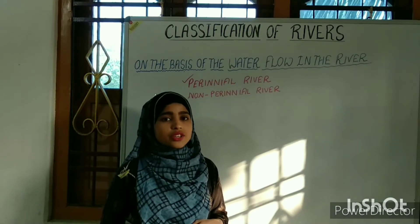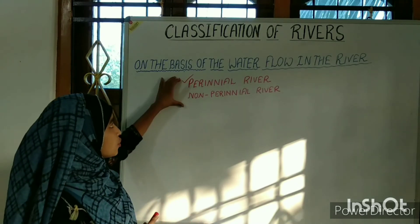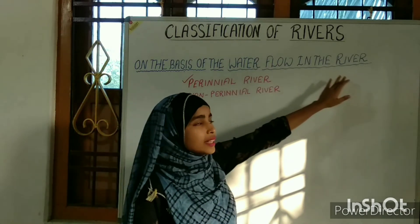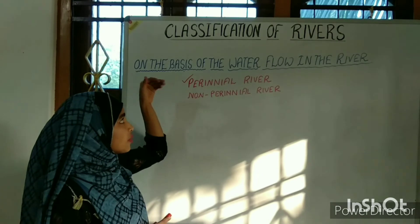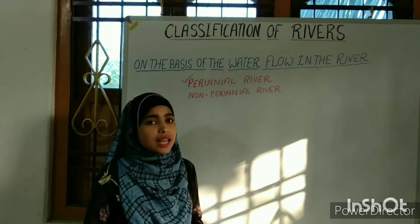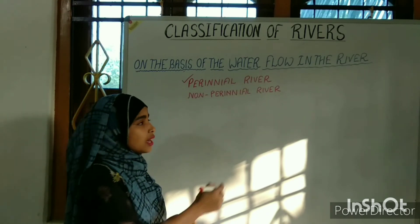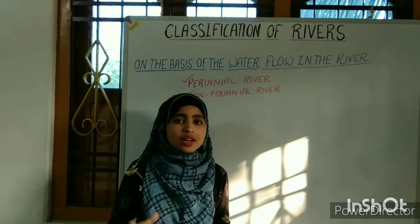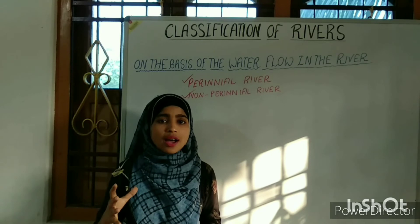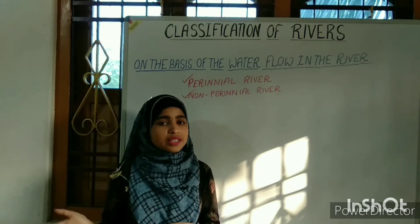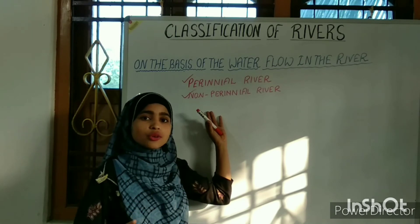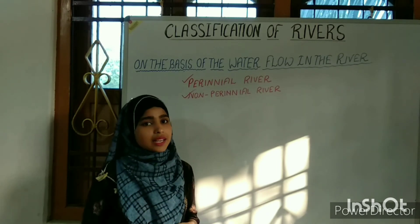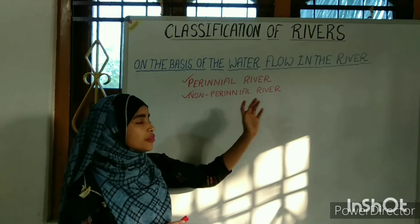Now, the first classification of rivers: rivers can be classified into two broad categories on the basis of water flow — the perennial river and the non-perennial river. Perennial rivers are those which flow throughout the year, and the Ganga is the best example of a perennial river. Non-perennial rivers are temporary rivers that can be found only during the rainy season because they do not flow throughout the year. Krishna, Tapti, and the Barak are the best examples of non-perennial rivers.